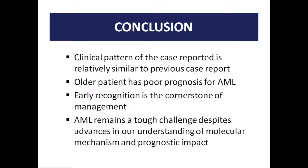In conclusion, the clinical patterns of this case are relatively similar to previous case reports. Older patients have a poor prognosis for AML, as it has the lowest survival rate compared to other types of leukemia. The 5-year survival rate is about 20–25% for normal adults; however, in elderly patients, the survival rate is even worse. Earlier recognition is the cornerstone of management. AML remains a tough challenge despite advances in understanding of molecular mechanisms and prognostic impact. Therefore, it is important to improve rapid diagnosis and treatments to reduce patient mortality.